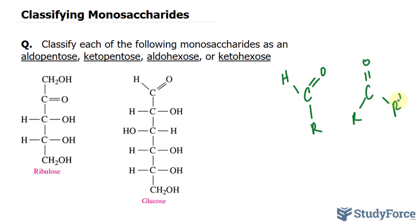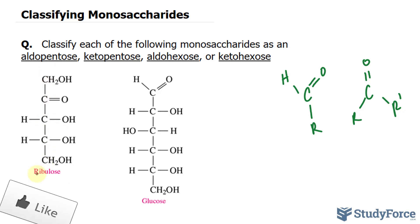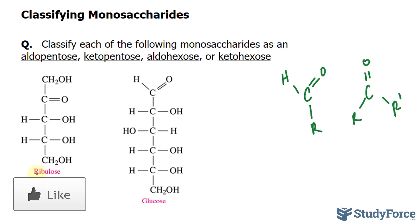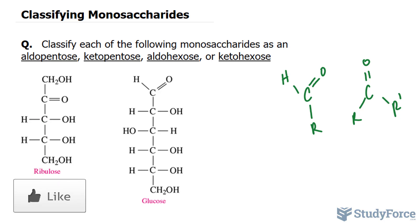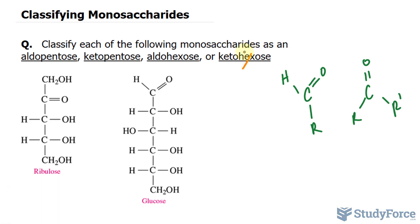So given that information, take a look at ribulose. We have one, two, three, four, five — so the carbon backbone of this molecule is five carbons long. That means we can reduce our choices down; we don't need to include those six-carbon options.